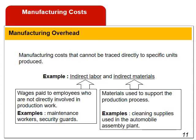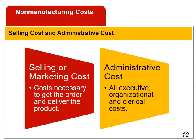Manufacturing overhead also includes: indirect labor costs that cannot be physically or conveniently traced to the creation of products, and indirect materials that are part of the finished product but cannot be easily traced to it. A manufacturing company incurs many other costs in addition to manufacturing costs. For financial reporting purposes, most of these are classified as selling or marketing costs and administrative costs. Marketing costs include all costs necessary to secure customer orders and get the finished product into the hands of the customer. Administrative costs include all executive, organizational, and clerical costs associated with the general management of an organization that are not classified as production or marketing costs.